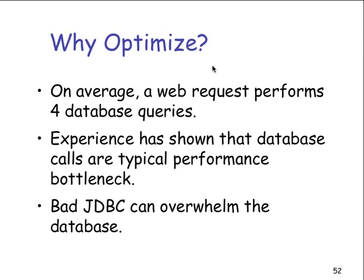Why do we need to optimize? If we don't optimize, it runs too slowly and no one's going to use our program. On average, a web request performs four database queries per transaction — that's a lot of queries. Experience has shown that database calls are typically performance bottlenecks, and database problems create both network and database bottlenecks.